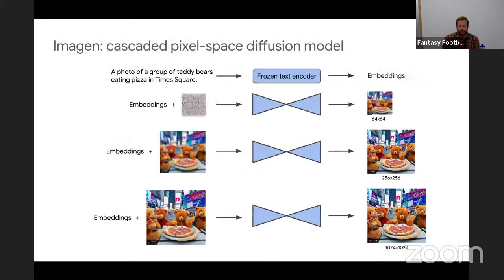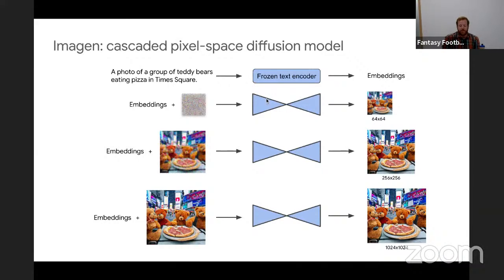In practice, we often train a cascade or set of diffusion models. The Imagen text-to-image model uses a pre-trained transformer to take a text embedding and maps it through a frozen text encoder. The first diffusion model goes from text embeddings and random noise to a 64×64 image. Then a series of super-resolution diffusion models upsamples to 256×256 and then to 1024×1024. Most state-of-the-art image generation models in pixel space have this kind of cascade structure, using the inductive bias of multi-scale generation.